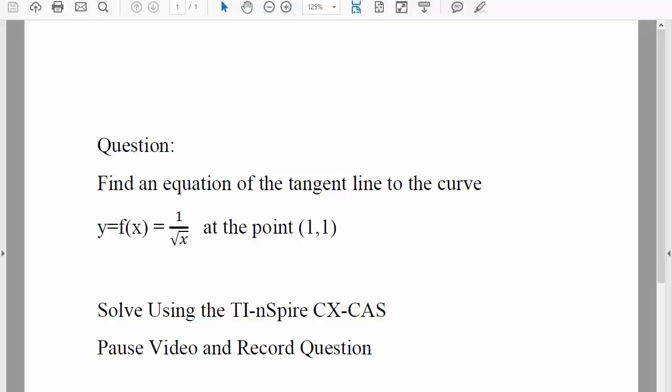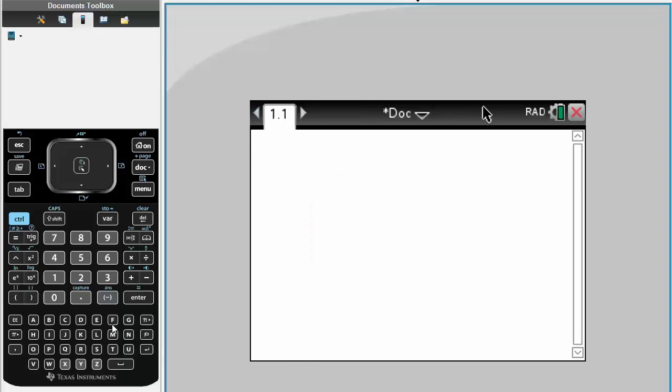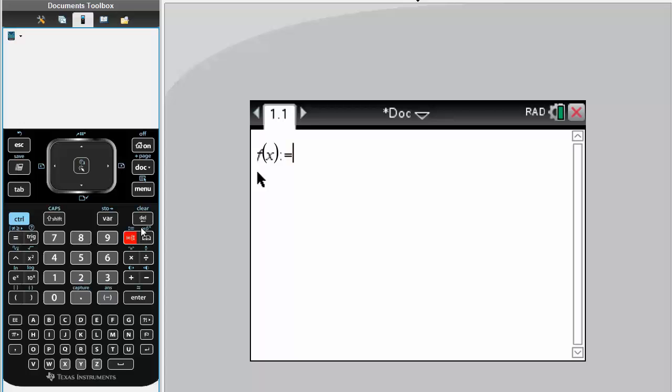Let's get started. First, we're going to define our function f(x) as 1 divided by the square root of x.